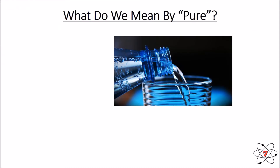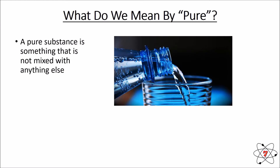The first thing we need to understand is what do we mean by the term 'pure'. A pure substance very simply is something that is not mixed with anything else — there is only one type of substance in something that's pure. We often use the word 'pure' incorrectly in everyday language, so we need to make sure we're using the correct chemical terminology. Elements are pure because they only contain one type of atom — hydrogen will only contain hydrogen atoms, so it is pure.